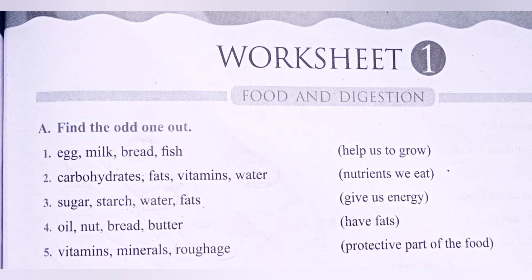Worksheet number one, Part A: Find the odd one out. First one is egg, milk, bread, or fish. These are food products that help in growing. Egg, milk, and fish help in growing, but bread is a product that won't help in growing. So bread is the odd one out.